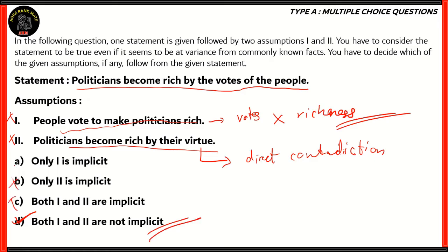Since both assumptions aren't implicit, option D becomes the right option. Options C, B, and A are incorrect because none of the assumptions are implicit to the statement, and in all of those options, either one or both of them are said to be implicit, which is incorrect.